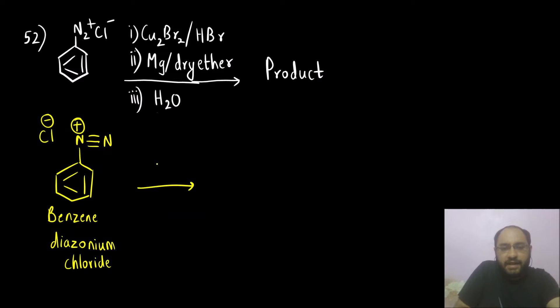First reagent that we are adding is Cu2Br2. This is cuprous bromide, copper, it is also called as copper one bromide. From this what we will get, we will get our nucleophile. What is a nucleophile? Br minus.